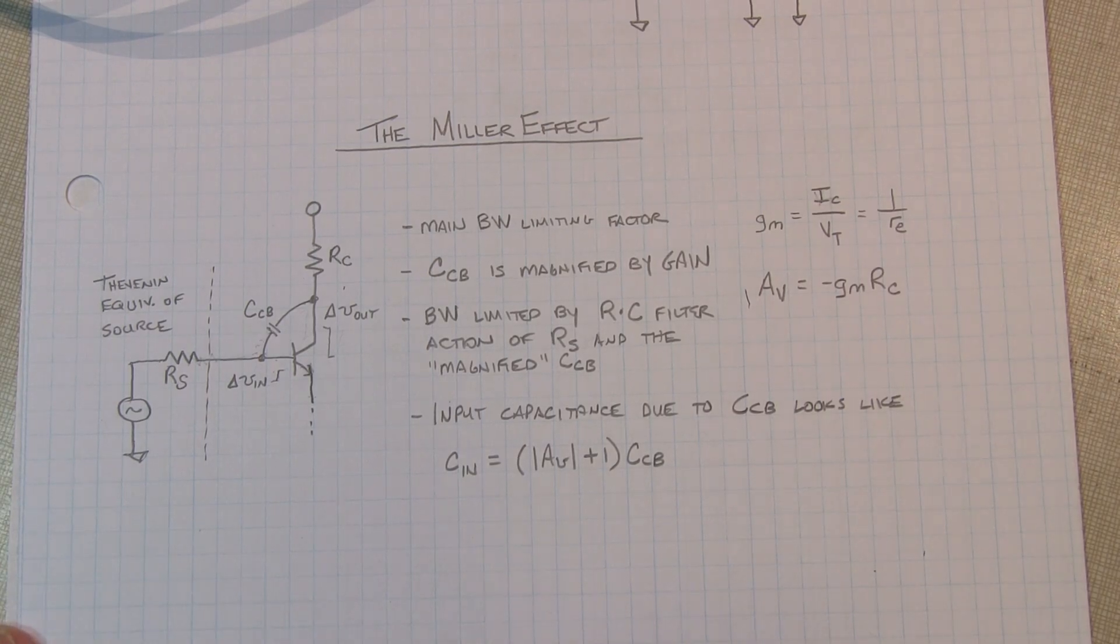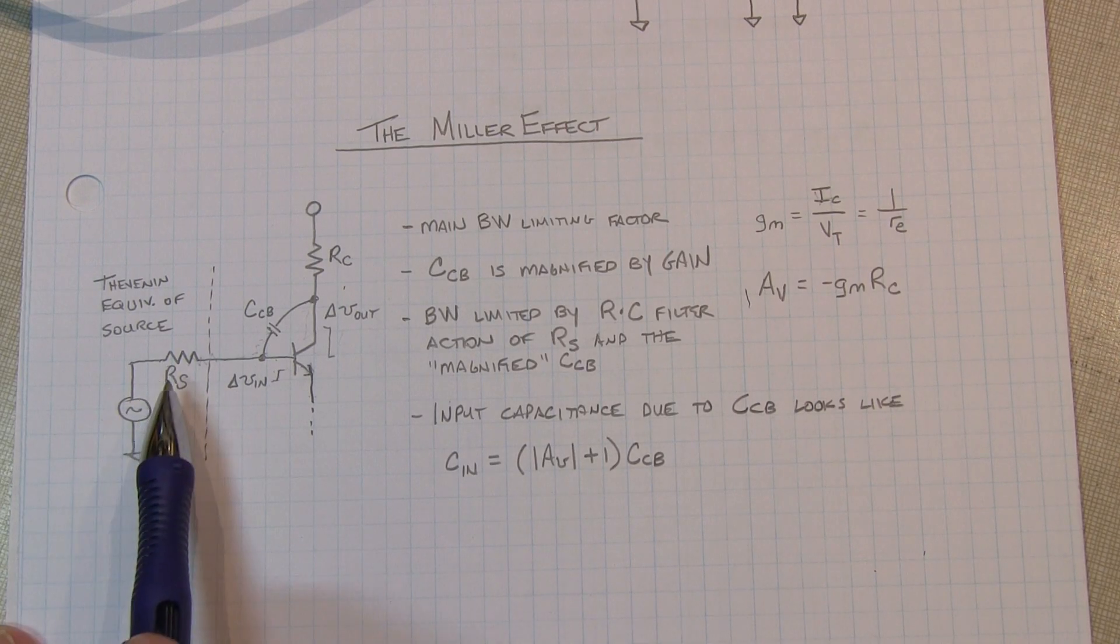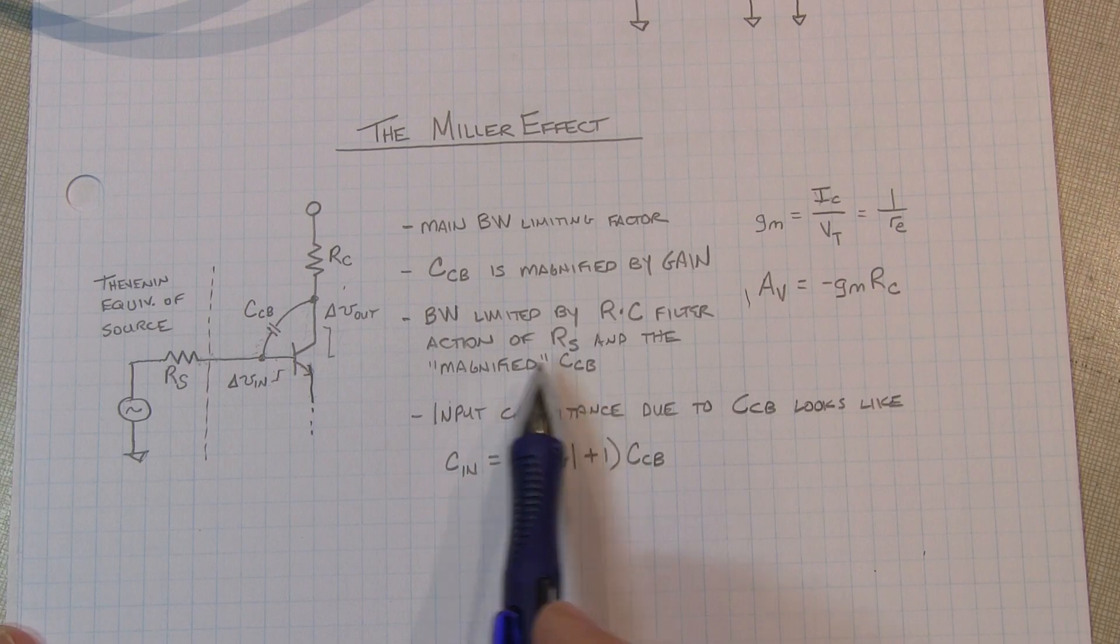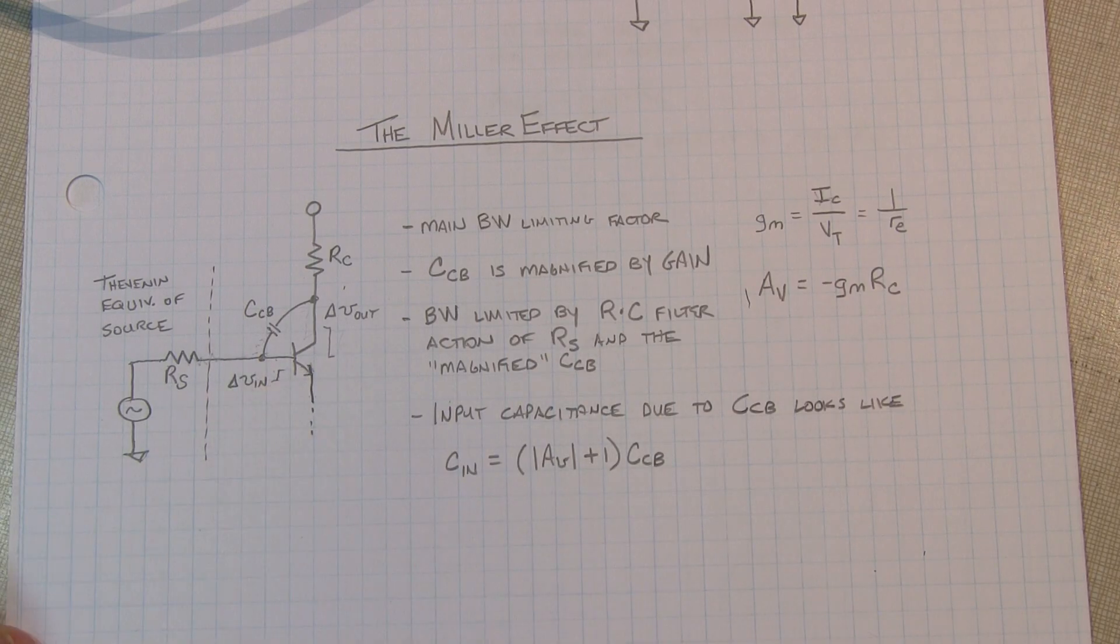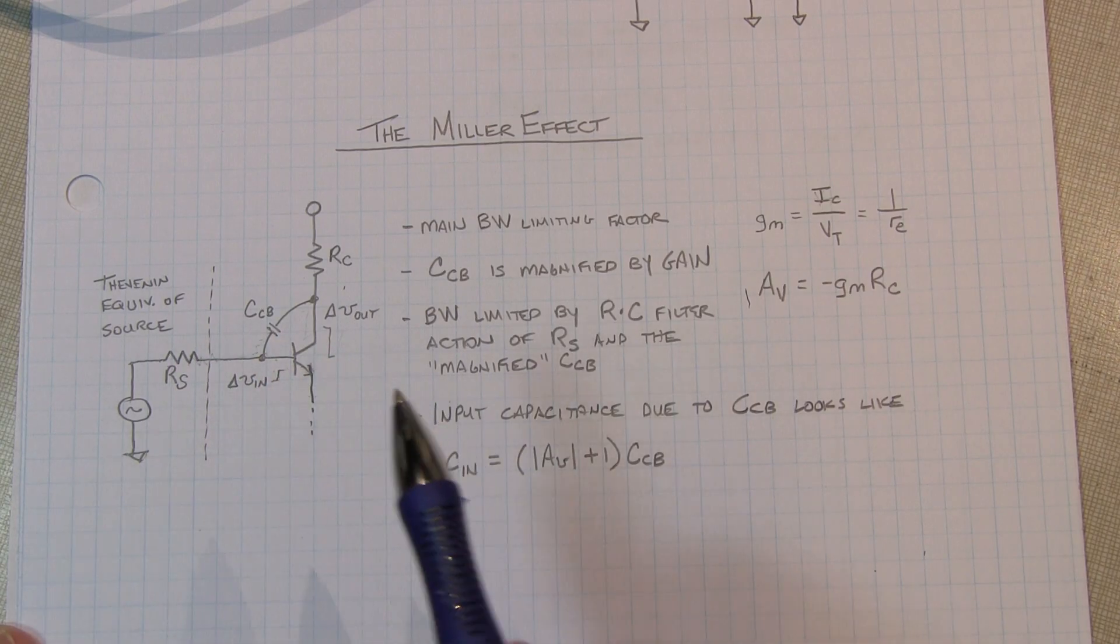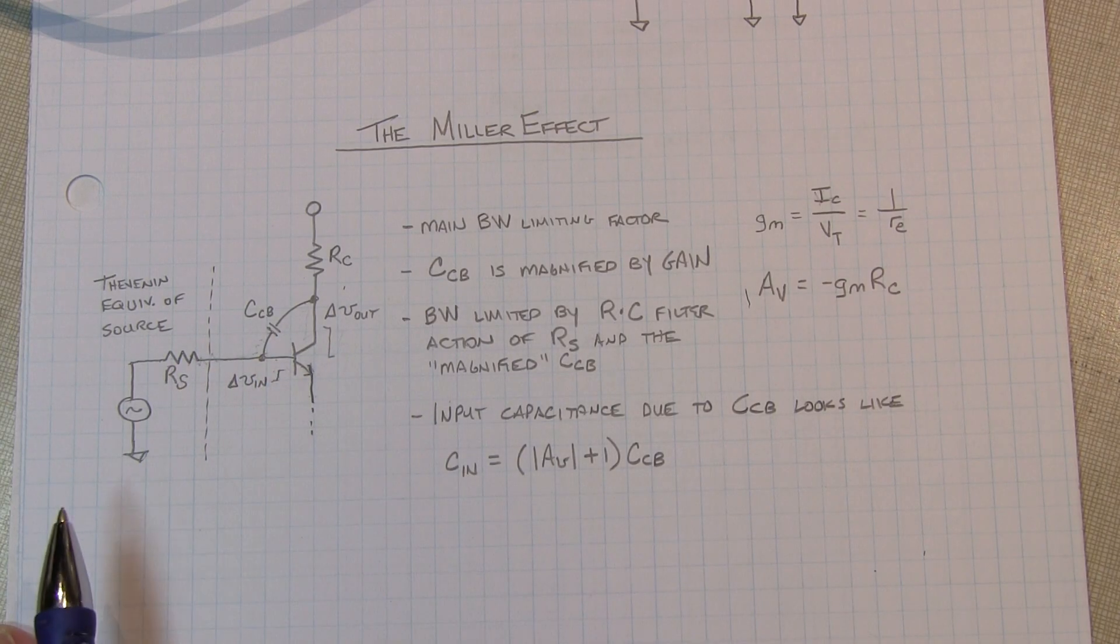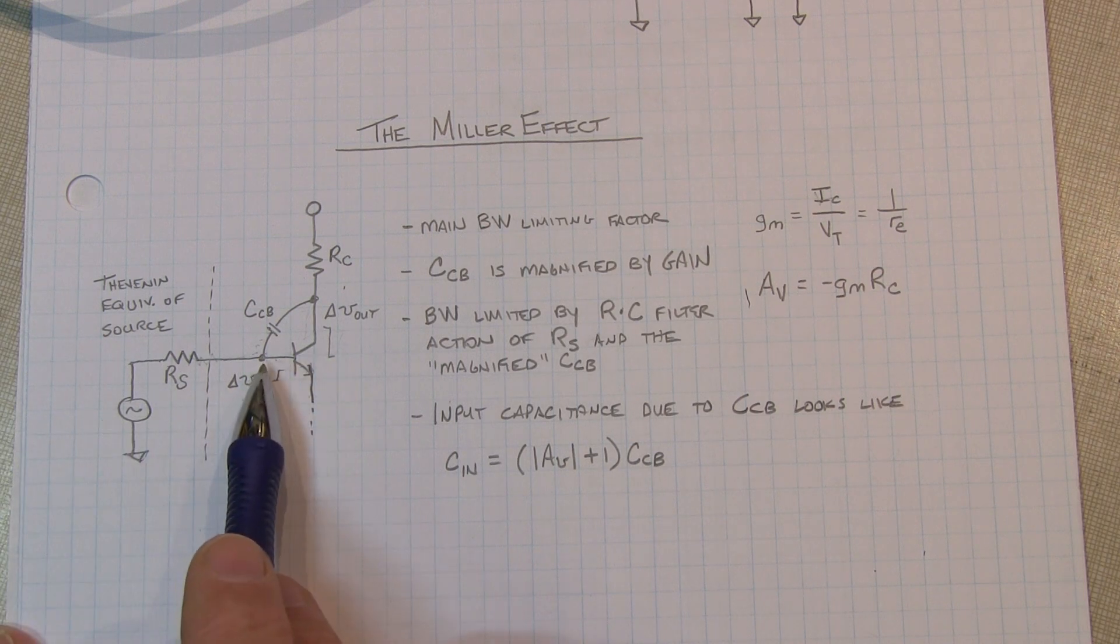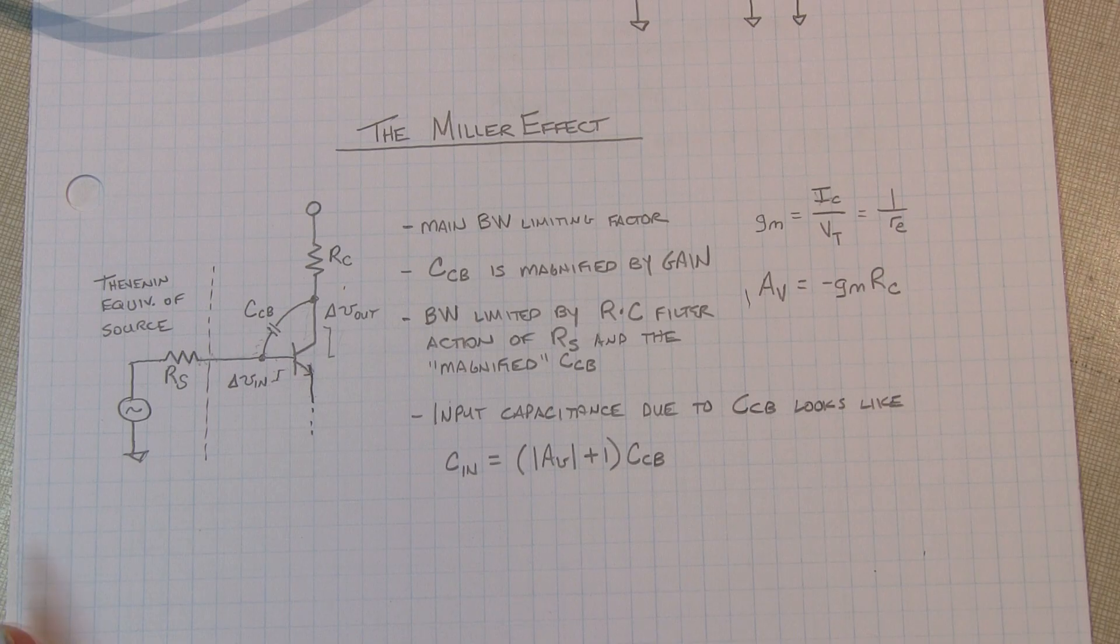Now in very low impedance circuits where the source impedance is a very low source impedance, it doesn't matter so much because the R in that RC filter is going to be pretty low. But oftentimes, if you're using an amplifier in a circuit somewhere to provide some gain, the source impedance isn't going to be terribly low, and therefore this Miller magnification of the collector base capacitance can be quite detrimental.